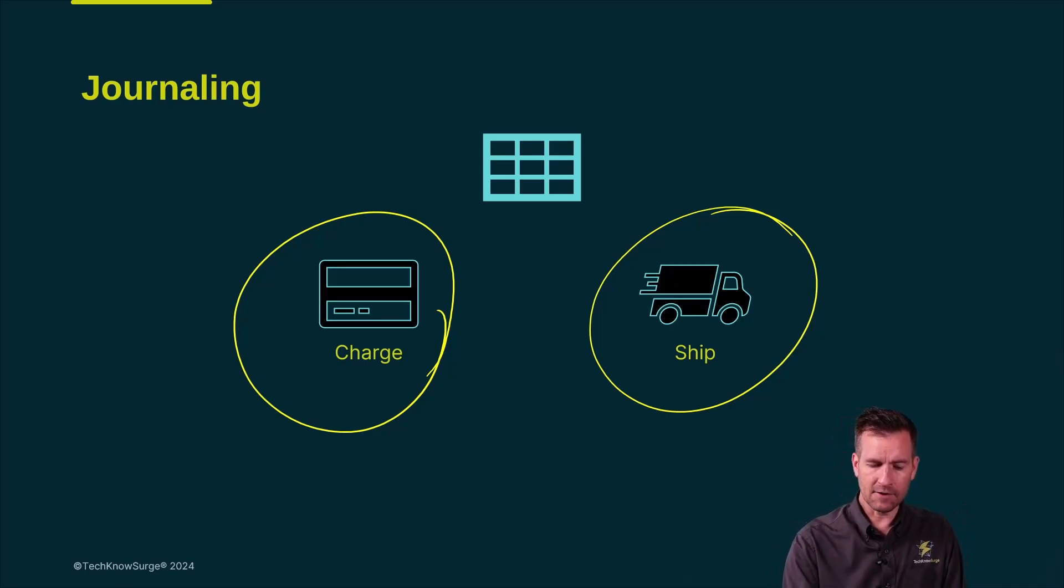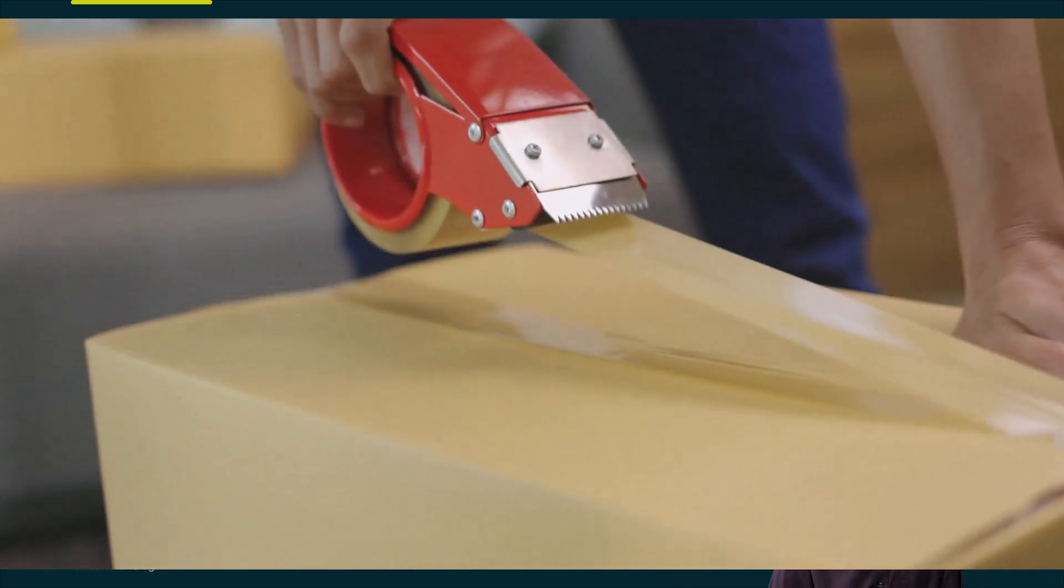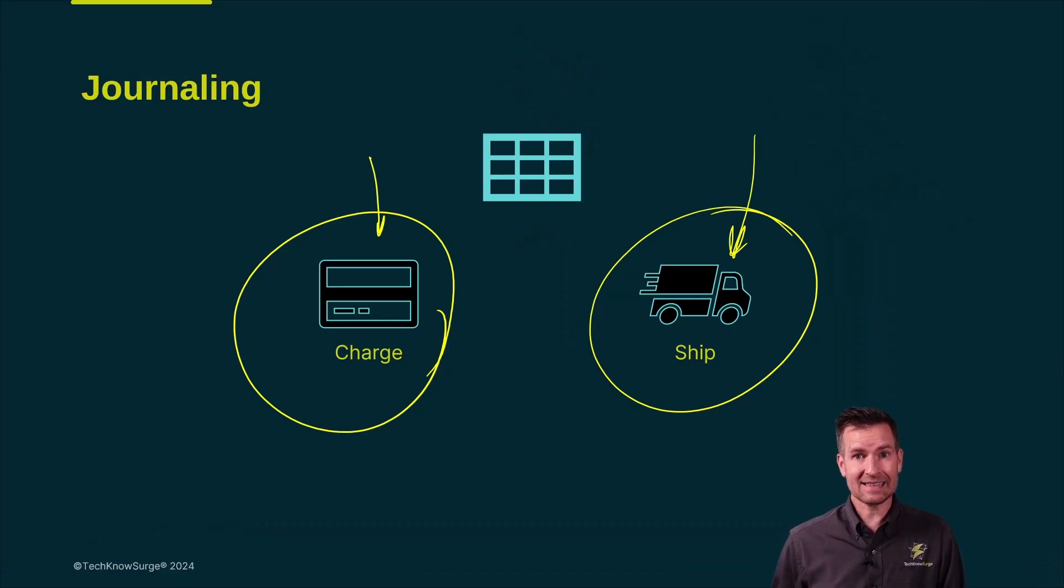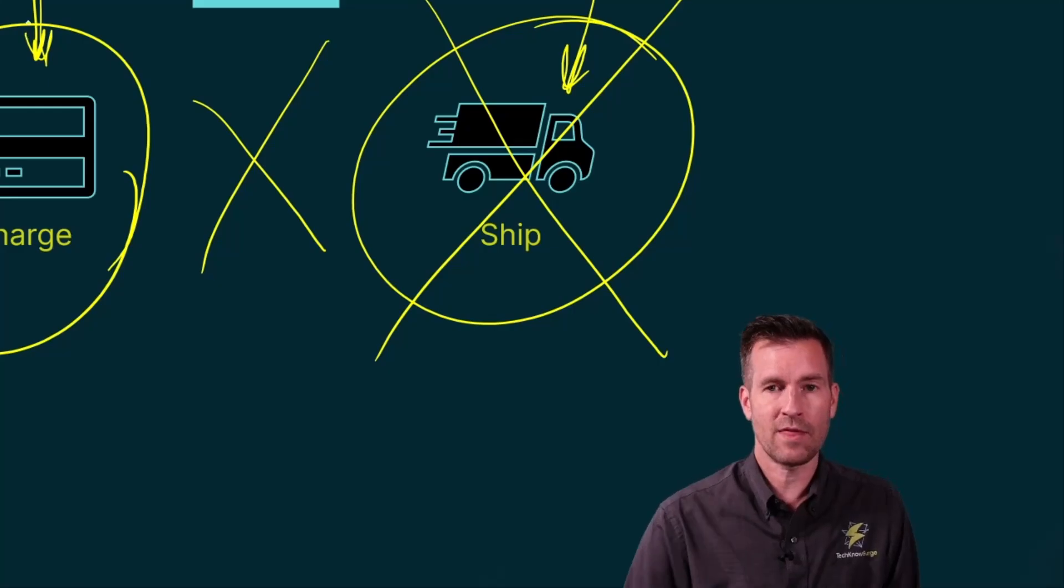Let's say I first of all take their order. Maybe I'm online with them and I take their order and so I charge their credit card for that order and then I go and ship that order to them. But let's say I get distracted somewhere in between, so shipping never happens. I never get to the shipping part.